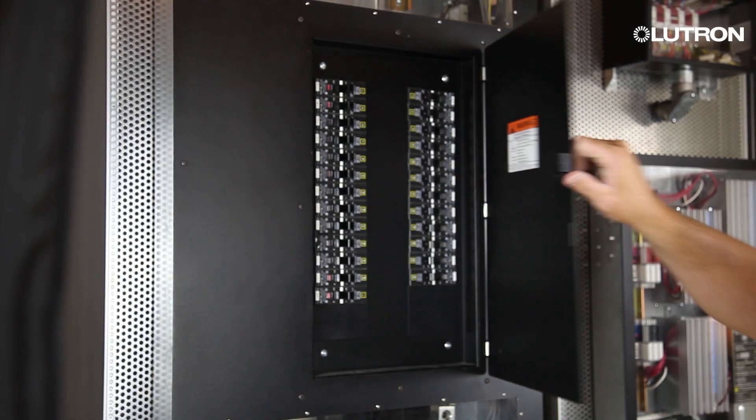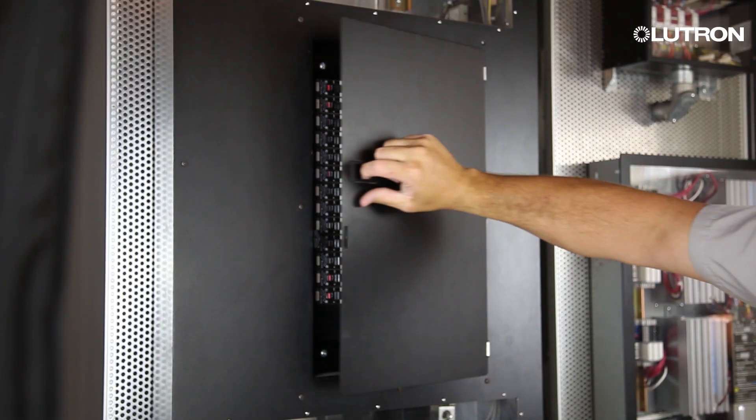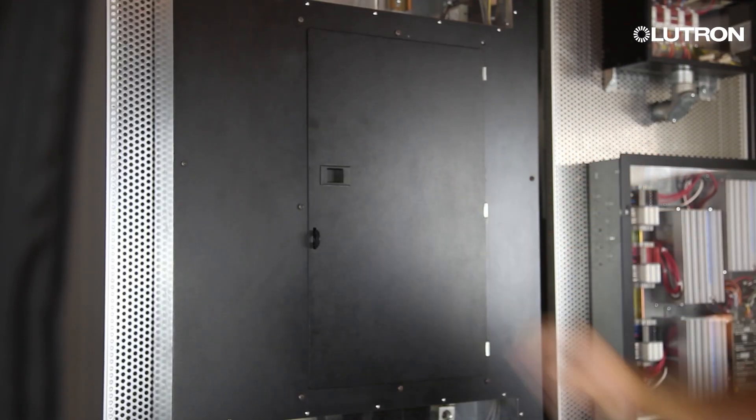Before installing your new Lutron Dahlia dimmer, be sure to turn off the power at the circuit breaker. Test that the power is off by turning the switch on and off at the wall location.